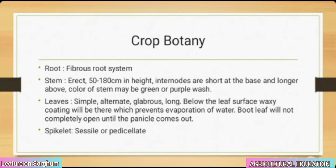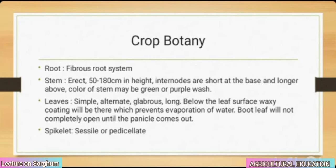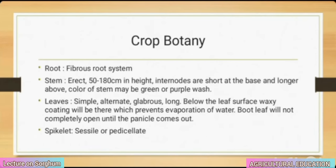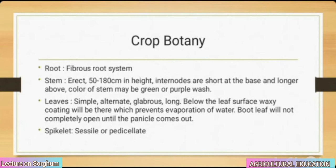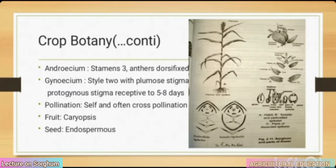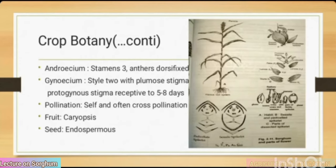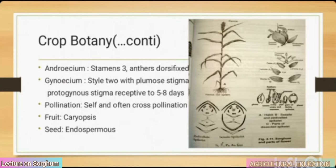Color of the stem may be green or purple. Leaves: simple, alternate, glabrous, long. The leaf surface has a waxy coating which prevents evaporation of water. The boot leaf will not completely open until the panicle comes out. Spikelet: sessile or pedicellate. Stamens 3, dorsifixed. Gynoecium: style 2 with plumose stigma. Protogynous — stigma receptive 5 to 8 days. Pollination: self and often cross. Fruit: caryopsis. Seed: endospermic.